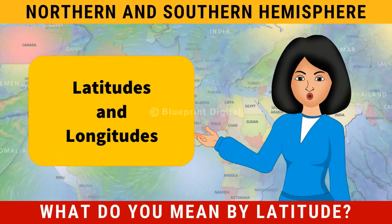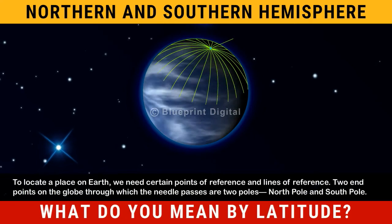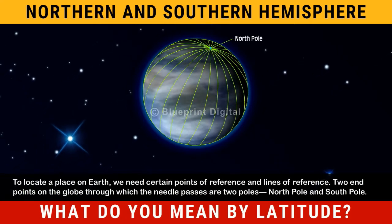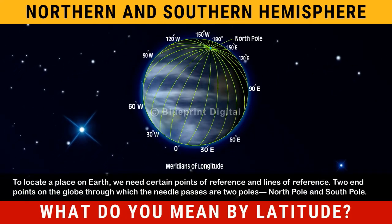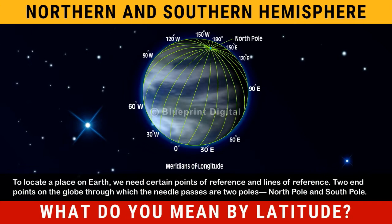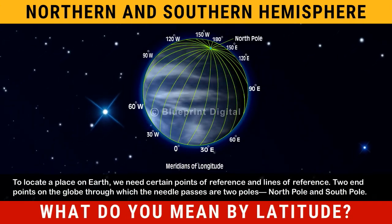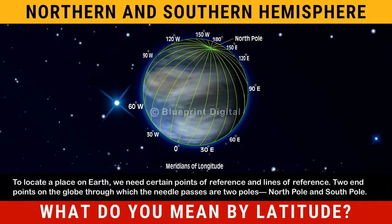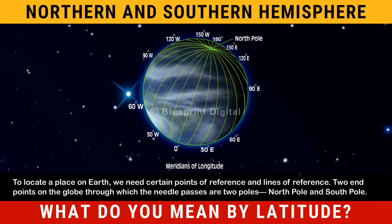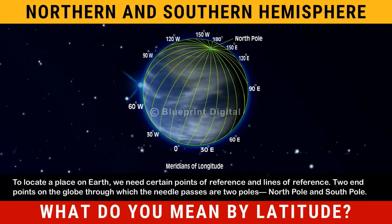Latitudes and Longitudes. To locate a place on Earth, we need certain points of reference and lines of reference. Two endpoints on the globe through which the needle passes are two poles — north pole and south pole. These are two points of reference.